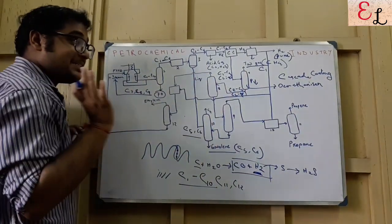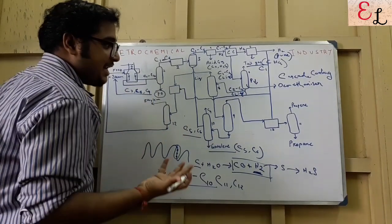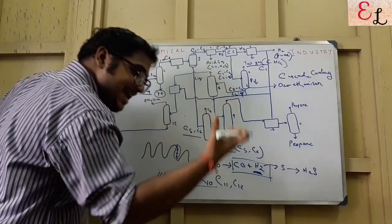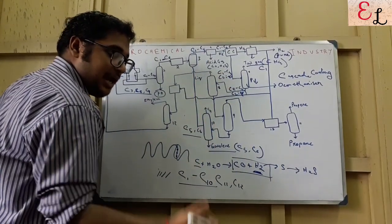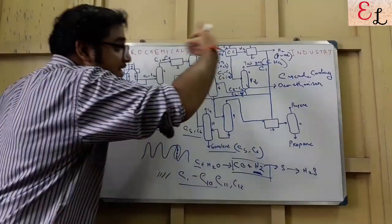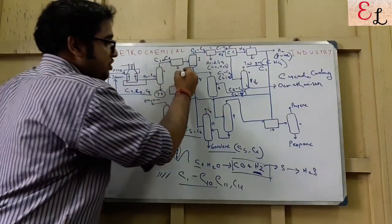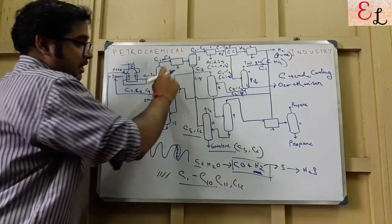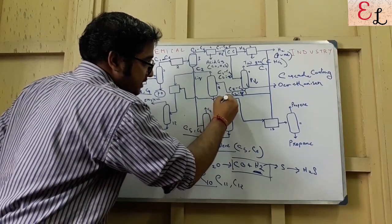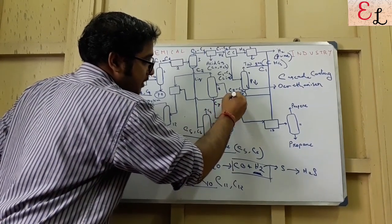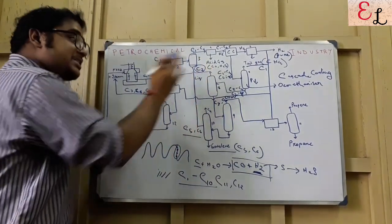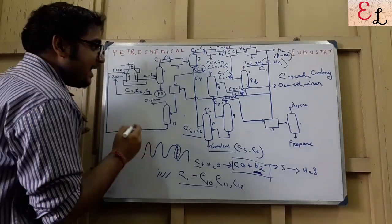From the de-methanizer, C2 to C4 in liquid state move to the de-ethanizer. Here the pressure is again slightly depressed such that C3 and C4 remain as liquid but C2 easily converts into vapour. C2 is removed as vapour, and what remains is C3 and C4 in liquid state, which proceeds to the next step.